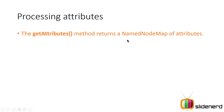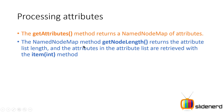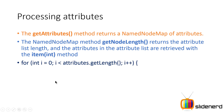getAttributes() returns a NamedNodeMap of attributes. The NamedNodeMap contains a method called getLength() which returns the number of attributes that have been retrieved. You can get each attribute with the method item(int) — if you pass zero it gives you the first attribute, one gives you the second attribute, and so on.